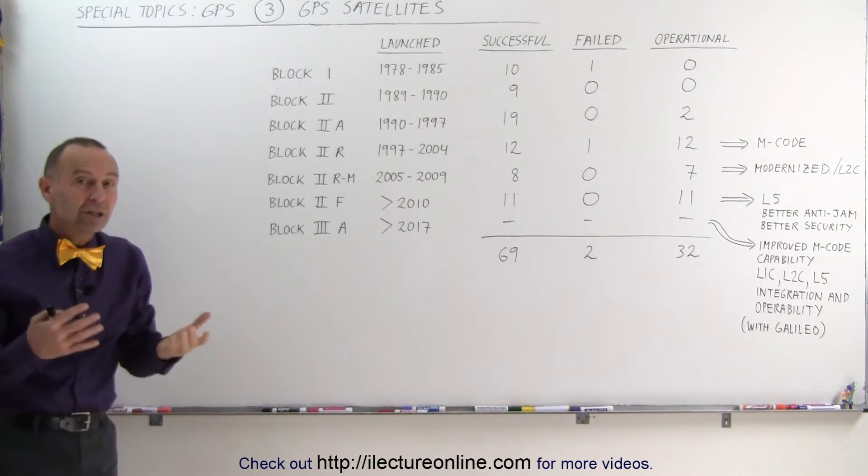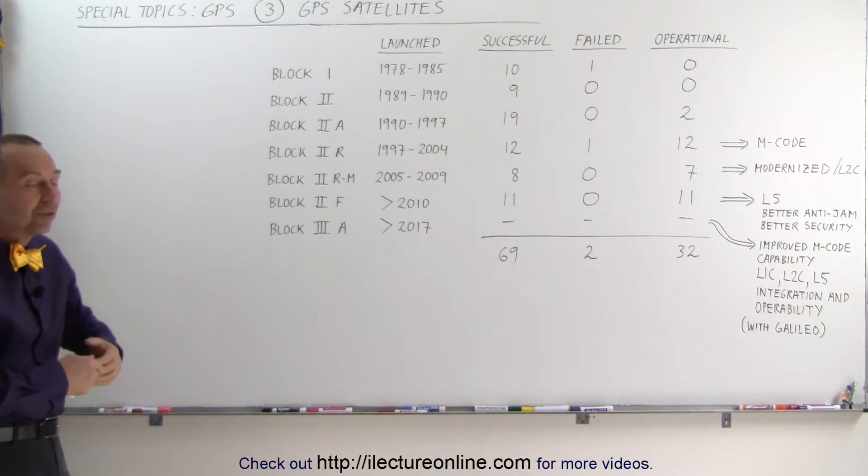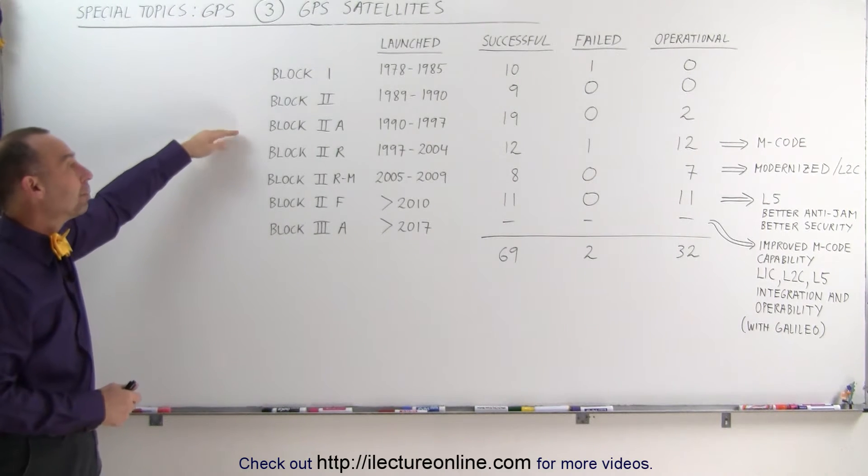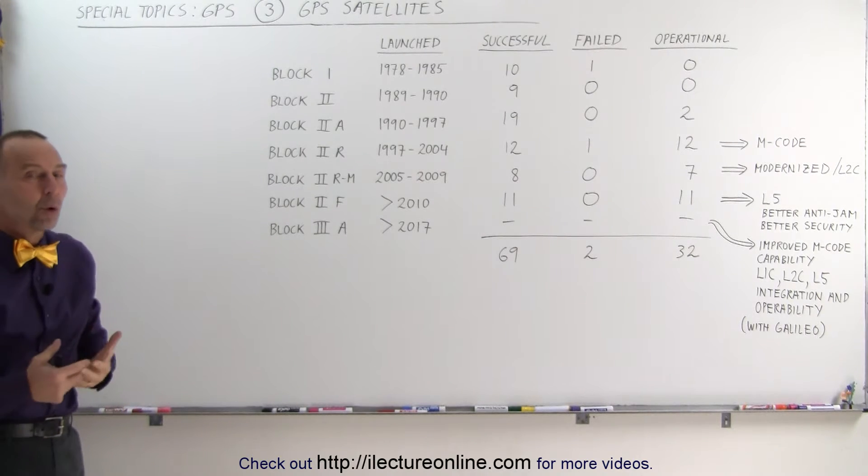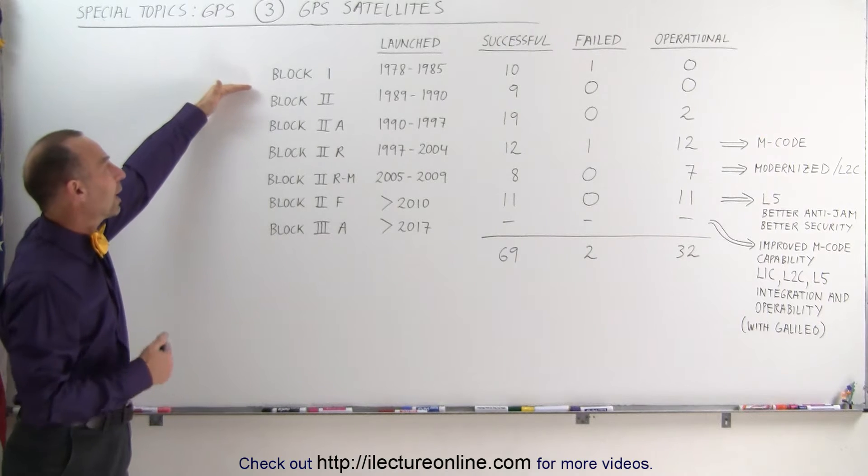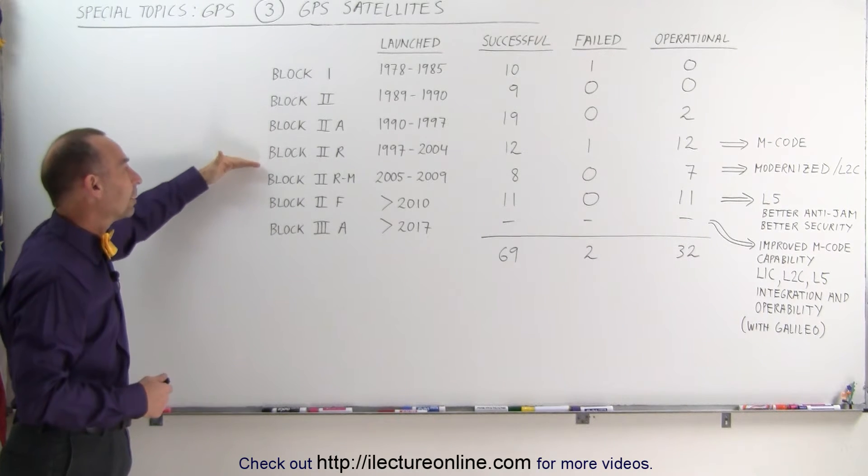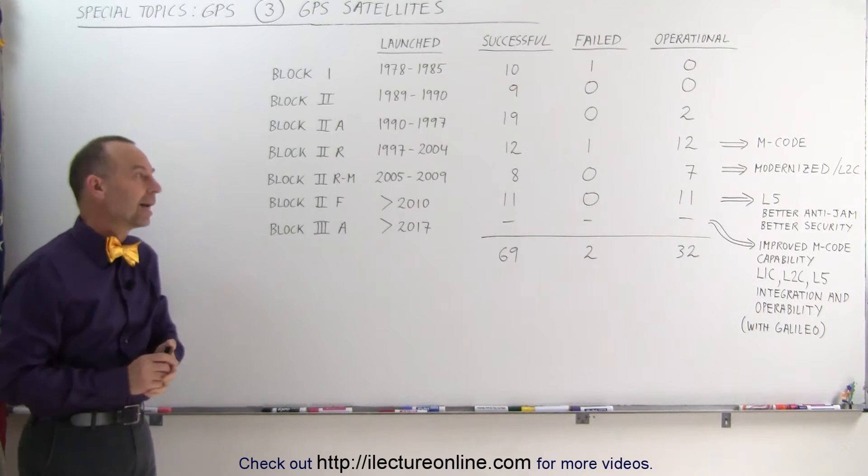When GPS became fully operational, when they had 24 total satellites ready to go, it was a combination of Block I and Block II satellites and some of the Block IIA's in order to keep the system going. But officially once they no longer had to rely on Block I and were able to rely completely on Block II satellites, that happened back in the late 1990s.